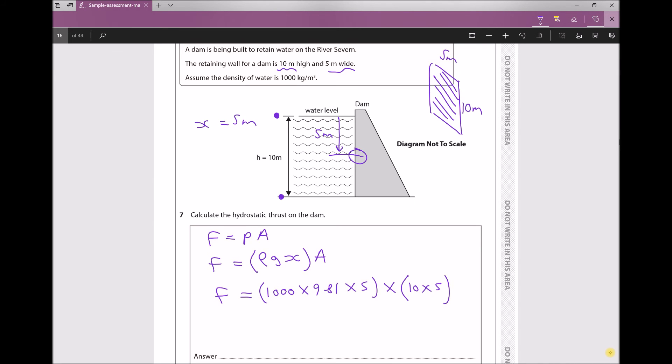Running that all through the calculator gives us a force equal to 2,452,500 newtons. We can express that much more neatly in meganewtons—mega being 10 to the 6. So we need to take our decimal back 6 places and we'll get a force equal to 2.453 meganewtons to 3 decimal places.